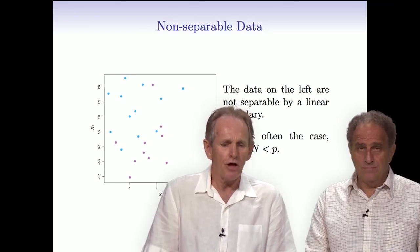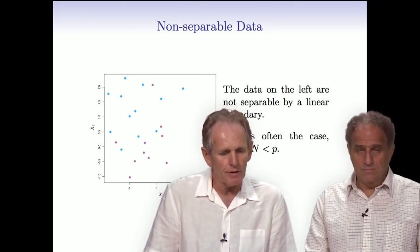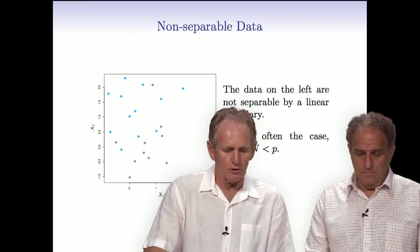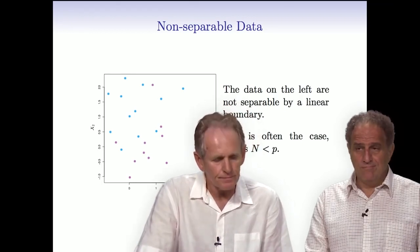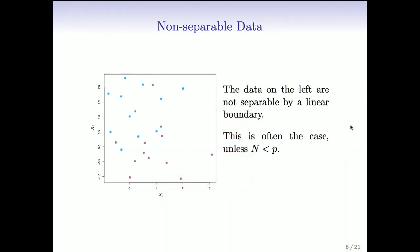So we'll start off in the case where the data aren't separable at all, as we see in this picture over here. Well, all good and well, what happens if the data aren't separable? I mean, it's a little bit wishful thinking that we can always separate the data perfectly with a hyperplane.